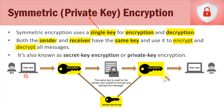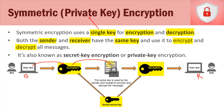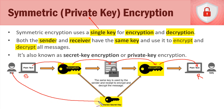Let's say we have Bob — he's the sender — and over here we have Sally, the receiver. Bob has his key and uses it to encrypt the plaintext, turning it into ciphertext. Sally receives the ciphertext and uses Bob's secret key, which he shared with her, to decrypt it and view it as plaintext.